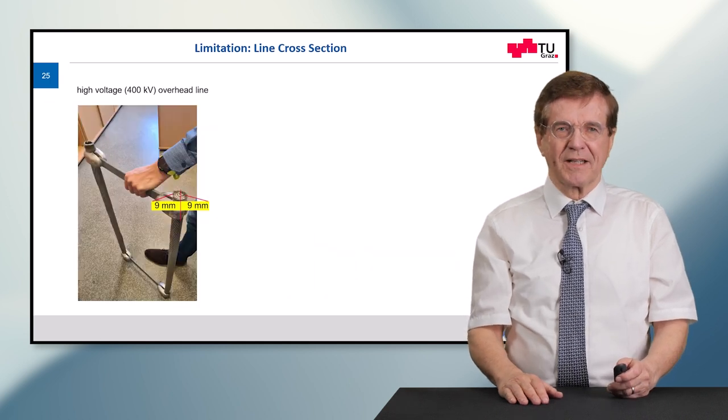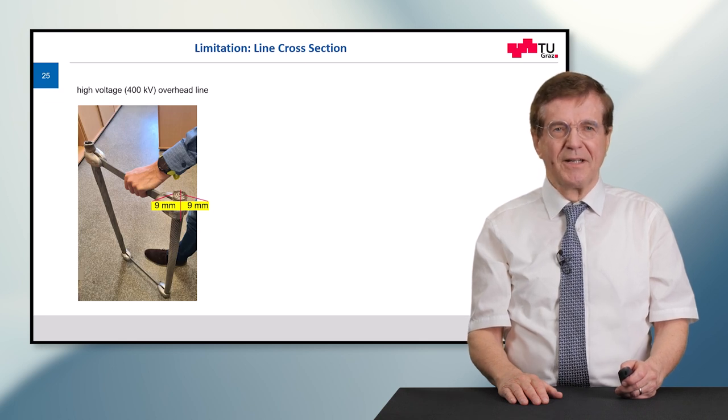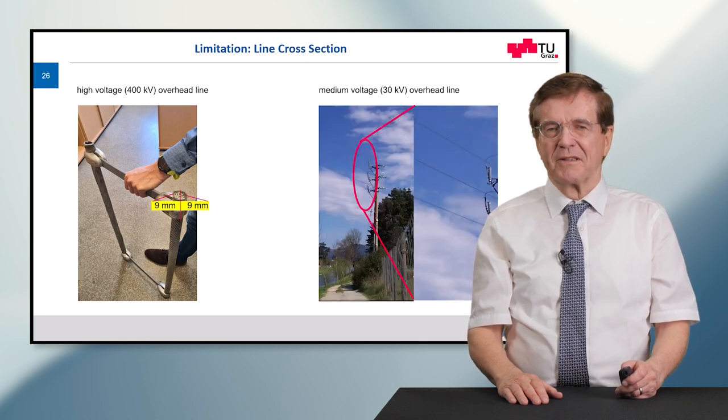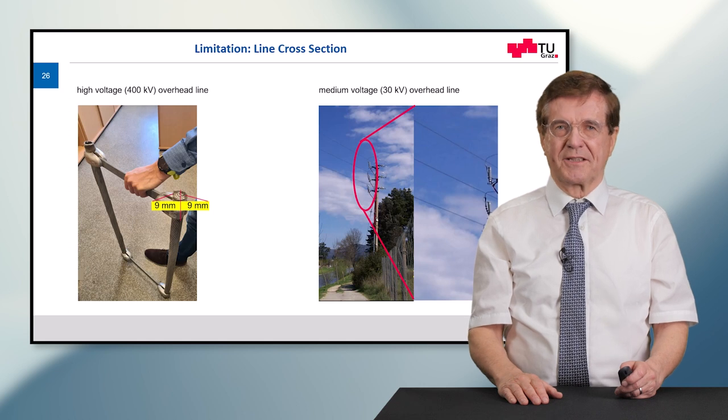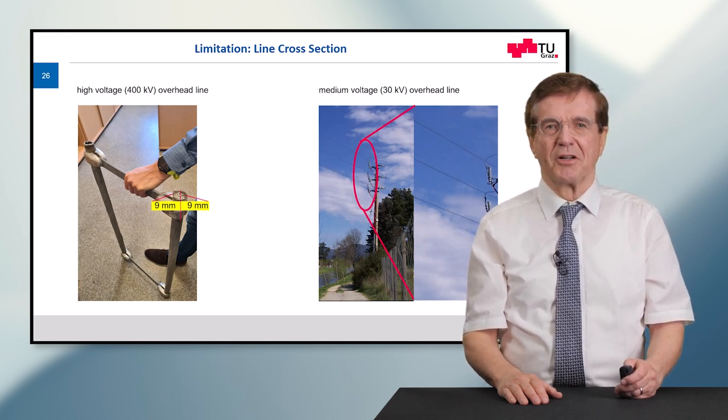The same, by the way, applies to overhead lines. We can see here a high voltage 400 kV overhead line. And also this general rule that the cross-section is limited by these eddy currents applies to medium voltage overhead lines.